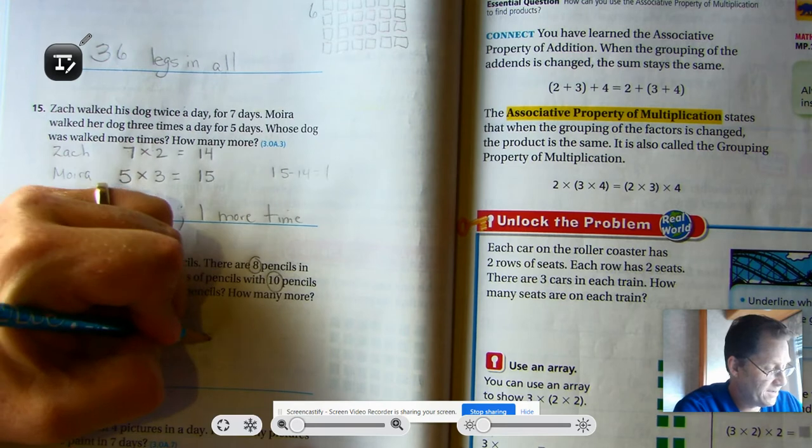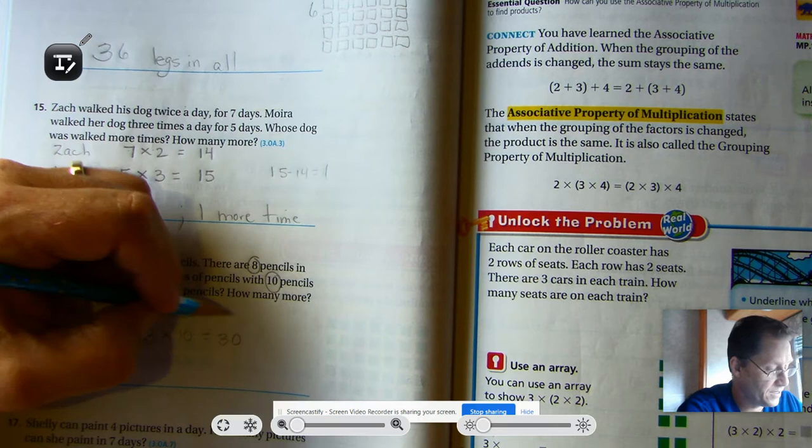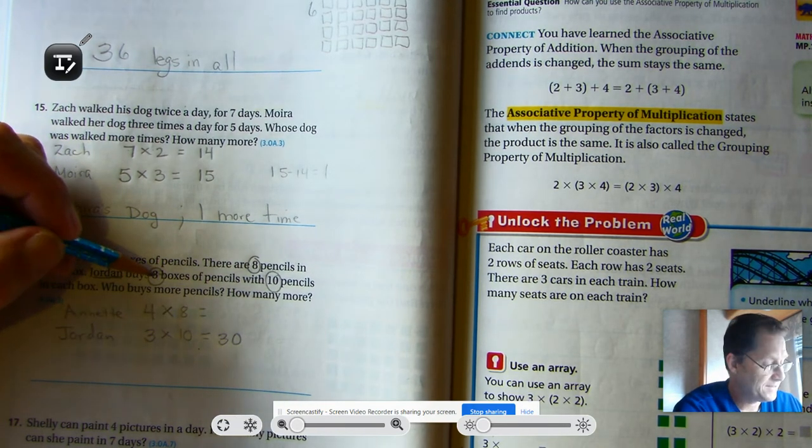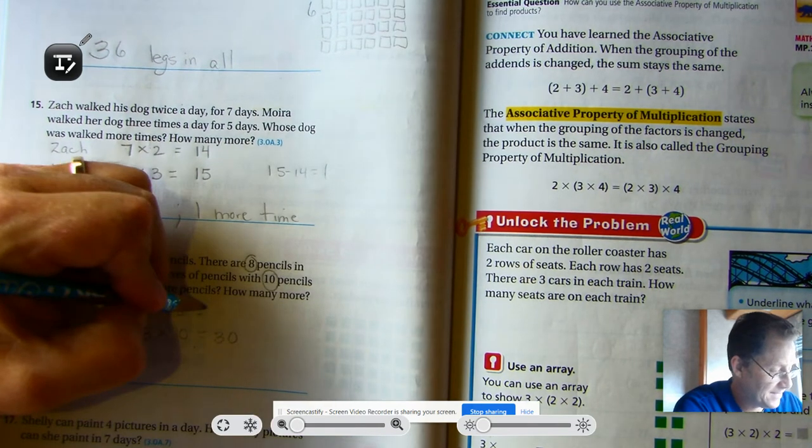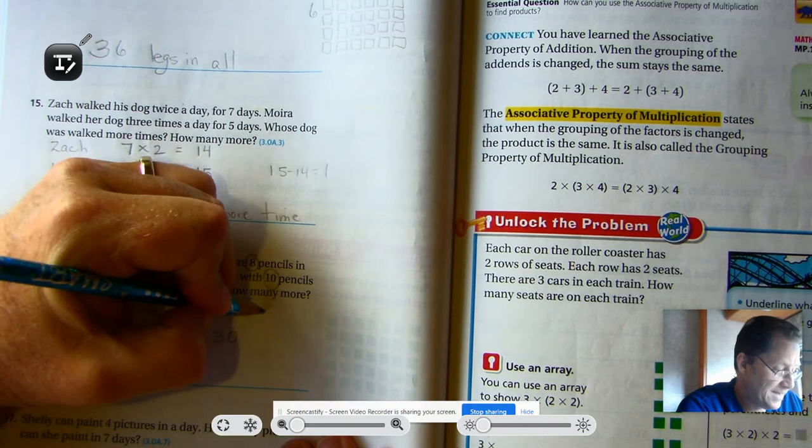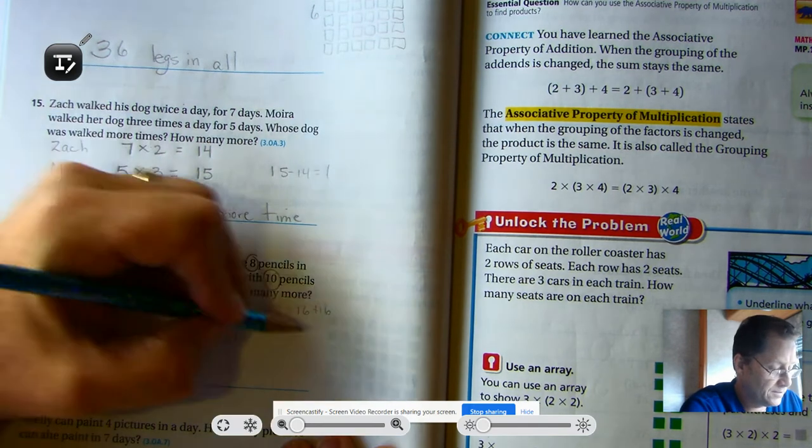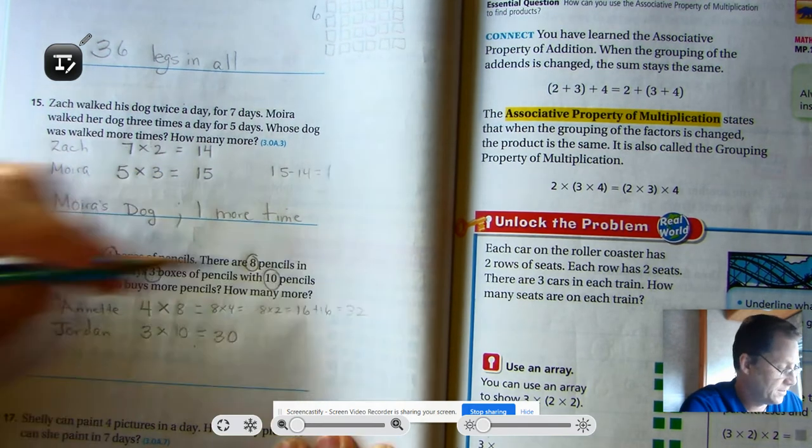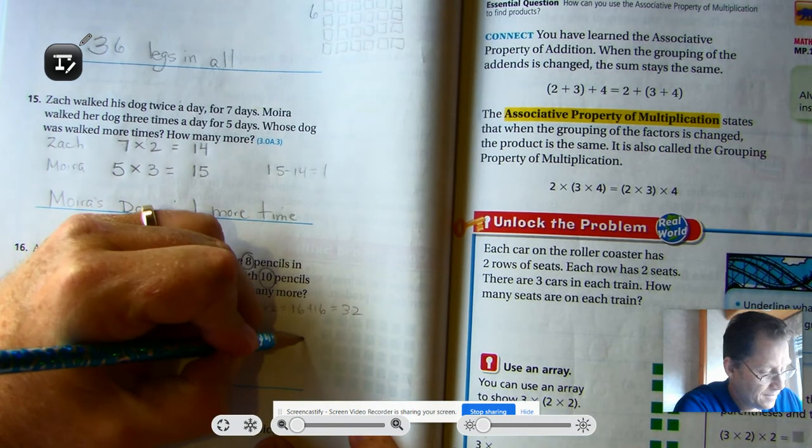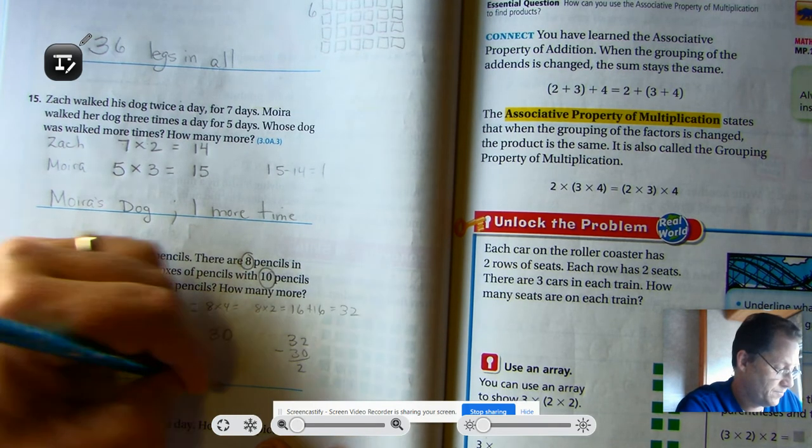Well, three groups of ten, we know that we'll end in a zero. And three times one is three. So Jordan bought 30 pencils. Four times eight. You can rewrite as eight times four. And eight times four is the same as eight times two doubled for 32. So Annette has more and she has two more pencils.